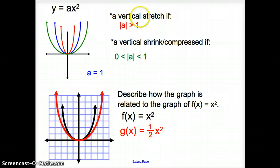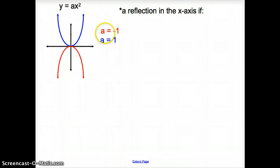So now let's describe what is happening to the graph if we have 1 half x squared. Well, if it's 1 half x squared, we have a vertical shrink happening. It's being shrunk or if you want to, you can use compressed. We're compressing it down from the top, so it could be shrink or compressed, whatever way you're more comfortable with.